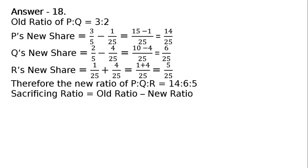Sacrificing ratio is equal to old ratio minus new ratio. P's sacrifice: 3/5 old share minus new is 14/25, LCM is 25, that is 5 into 3 is 15 minus 14, that is 1/25.